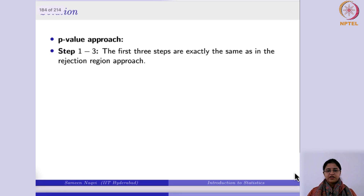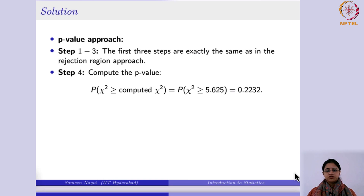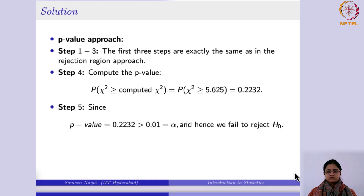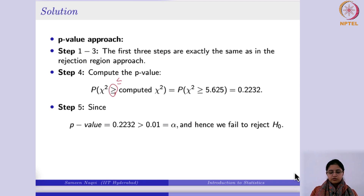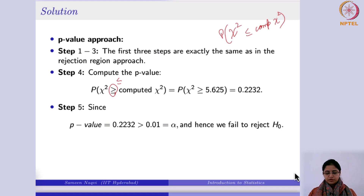For the p-value approach, the first three steps remain the same. Since this is a left-tailed test, the p-value equals the probability that chi-square is less than or equal to the computed chi-square value of 5.625. This p-value would also be compared to alpha to make the decision.